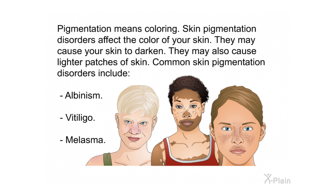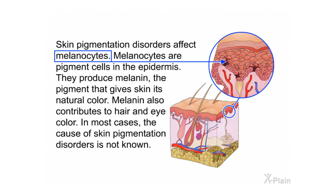Summary: Pigmentation means coloring. Skin pigmentation disorders affect the color of your skin — they may cause darkening or lighter patches. Common disorders include albinism, vitiligo, and melasma. These disorders affect melanocytes, which are pigment cells in the epidermis that produce melanin — the pigment giving skin its natural color and contributing to hair and eye color. In most cases, the cause of skin pigmentation disorders is not known.